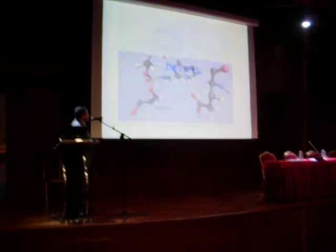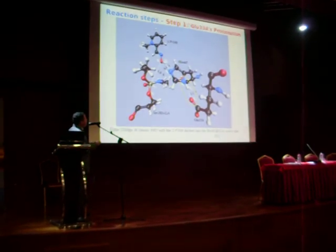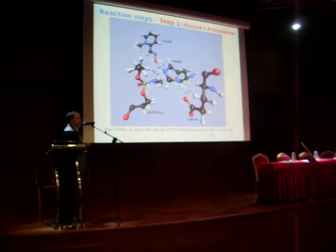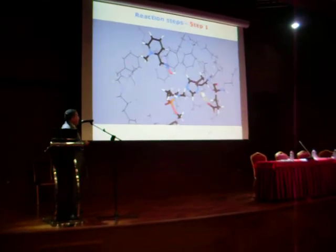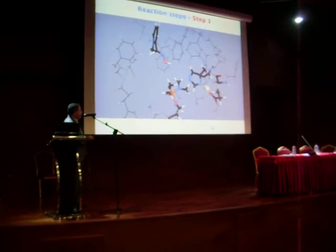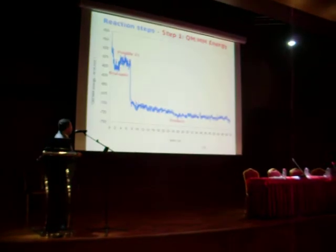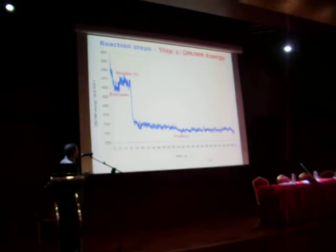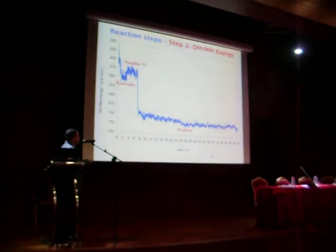The first step of the reaction was the protonation of glutamate-334 by histidine. This reaction occurred naturally. As we can see, the proton of histidine-447 was transferred to glutamate-334. We then computed the QMMM potential energy of the reactant, potential energy of the transition state, and the potential energy of the product.